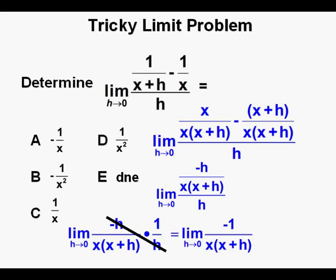So that leaves us with the limit as h approaches 0 of 1 over x times quantity x plus h, and as h approaches 0 that leaves us with negative 1 over x squared. We box in our answer, and circle our correct answer, B, yes.